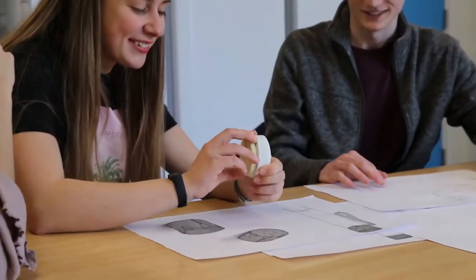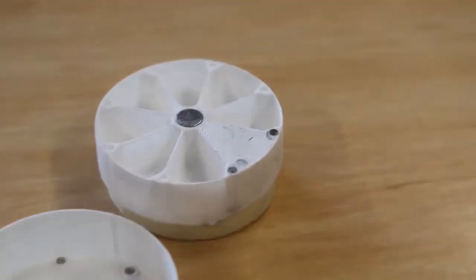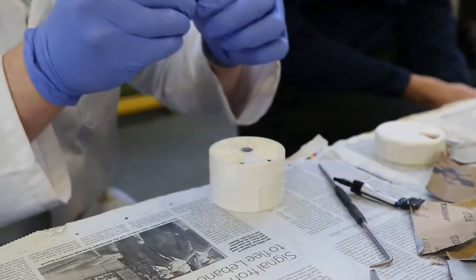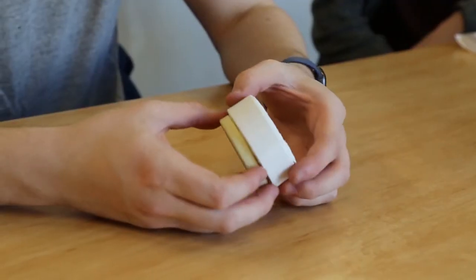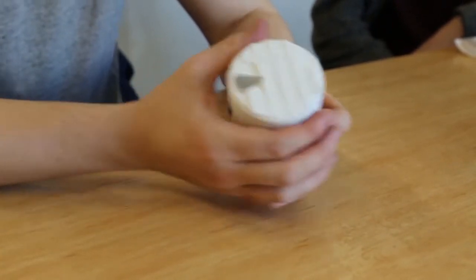So we took our prototype one to Fausta and we got some really valuable feedback from her. The decisions we changed was to add a notch to indicate how many days are left within the mechanism. And our mechanism in the end was magnets. So we had a central magnet that clipped it down and then we had little neodymium magnets around the outside that locked into each individual day.